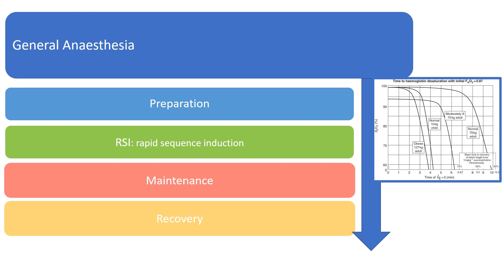The graphic on the right-hand side illustrates the time to desaturation after the onset of apnea in the pre-oxygenated patient. A healthy 70 kilogram adult has up to eight minutes until saturation drops below 90%. Moderate illness, starting at a lower saturation of 94%, decreases this to five minutes. A healthy child has no more than four minutes, and an obese adult has less than four minutes. These differences are due to increased VO2 in sick adults and children, and decreased functional residual capacity in the obese patient.